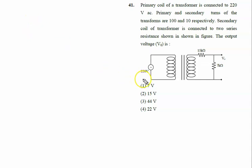Primary coil of a transformer is connected to 220 volt AC. Primary and secondary turns of the transformer: number of turns in the primary coil is 100 and number of turns in secondary is 10, so it is a step-down transformer.